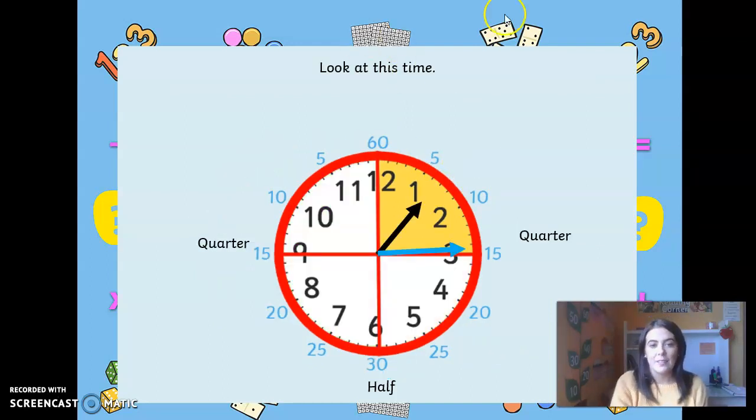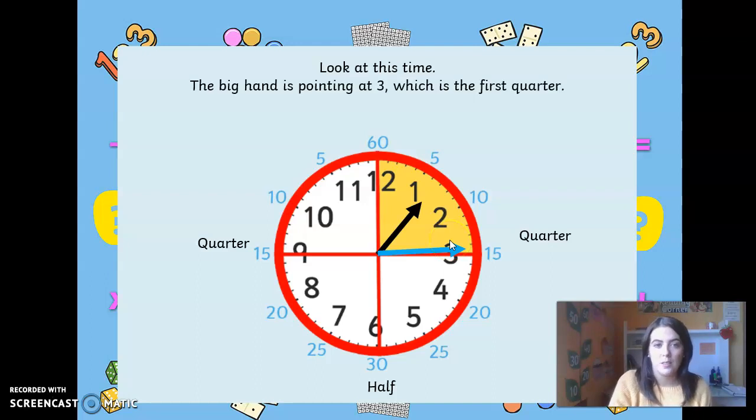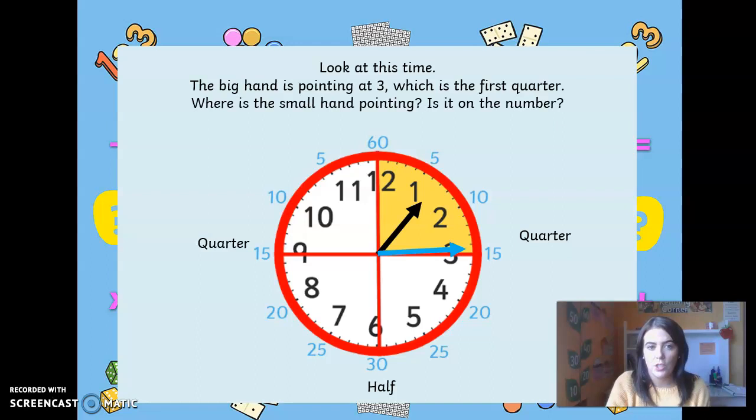So let's have a look at this time. What time is it here? You can see the hour hand is in between one and two because it is just past one o'clock and then it is here at 15. So it is quarter past one. The big hand is pointing at three, which is the first quarter.